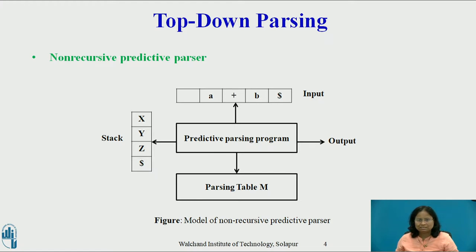The input buffer contains the string to be parsed, followed by $, a symbol used as a right-end marker to indicate the end of the input string. The stack contains a sequence of grammar symbols with $ on the bottom, indicating the bottom of the stack. Initially, the stack contains the start symbol of the grammar on top of $. The parsing table is a two-dimensional array M[A, a], where A is a non-terminal and a is a terminal or $. Each row is a non-terminal symbol, each column is a terminal symbol or $, and each entry holds a production rule.